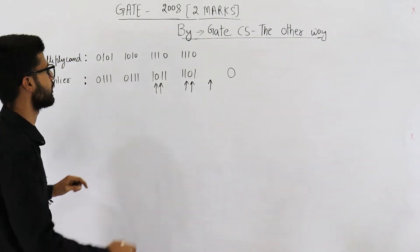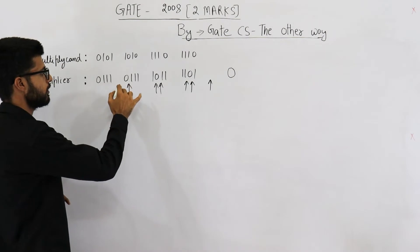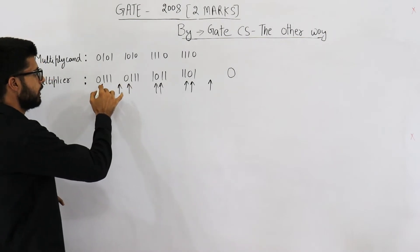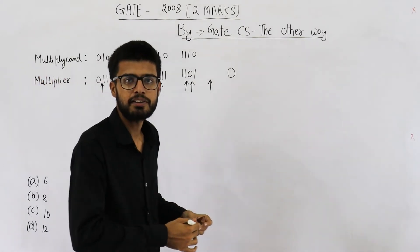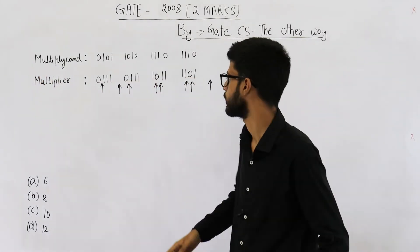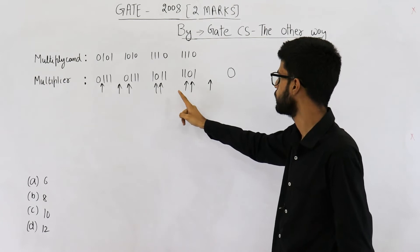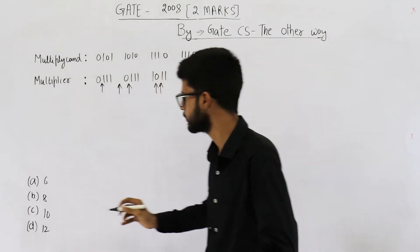Then you have no change till here so there is a change here, here as well as here. So these many additions plus subtractions will be done one, two, three, four, five, six, seven, eight. Your answer is eight.